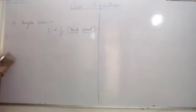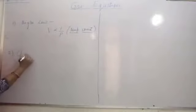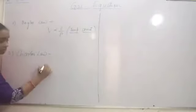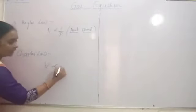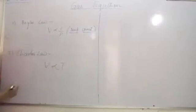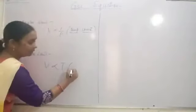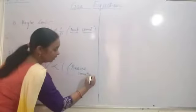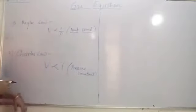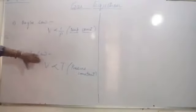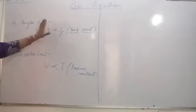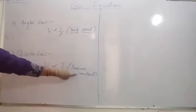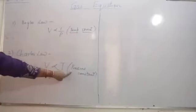The second law was Charles' law, which mentioned that volume is directly proportional to absolute temperature when the pressure remains constant. In both these laws, we are looking at volume when one of the parameters — either temperature in Boyle's law, or pressure in Charles' law — is held constant.